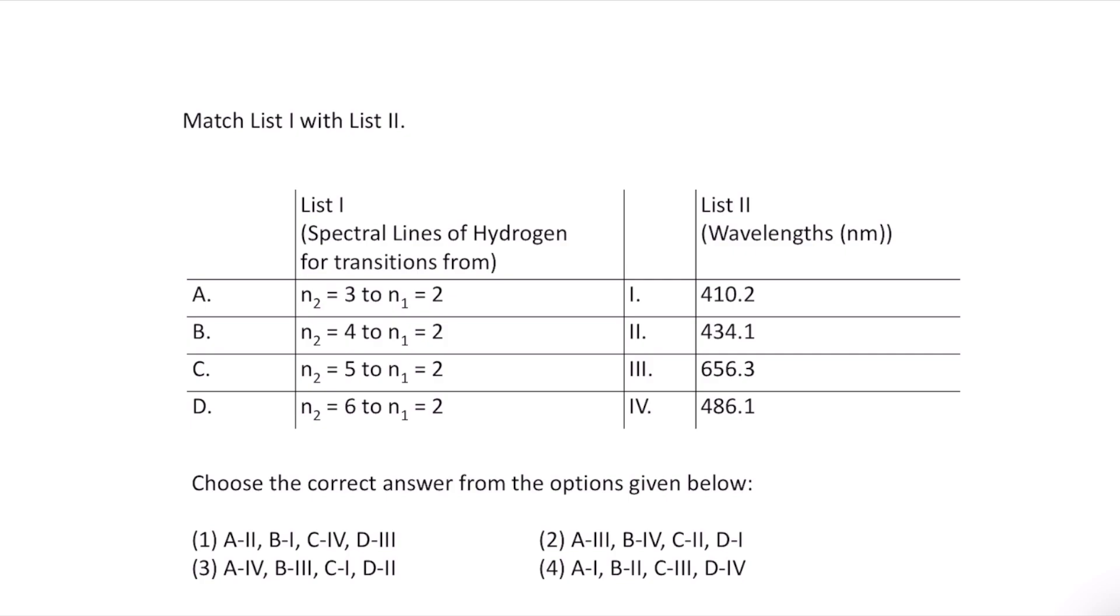In List 1, the spectral lines of hydrogen for different transitions are given, which we need to match with List 2 where the wavelengths are given.